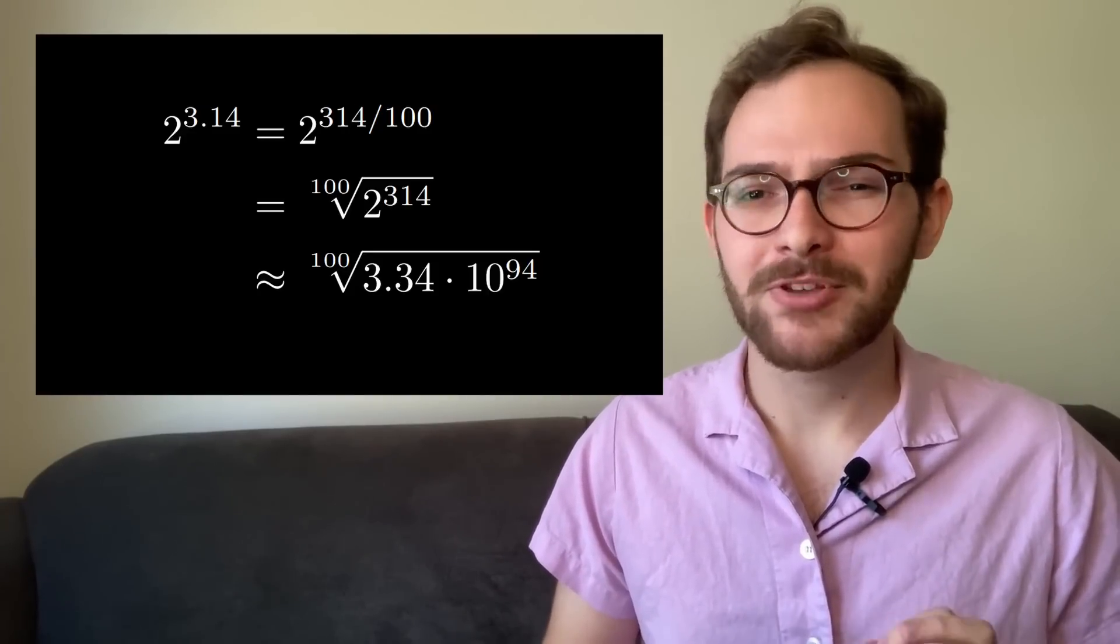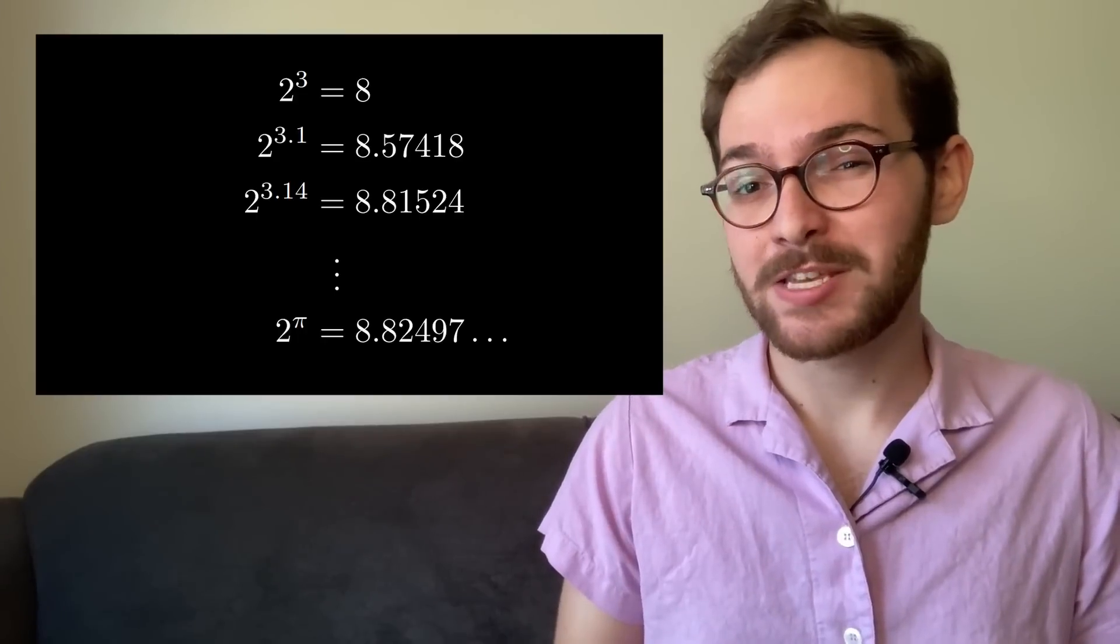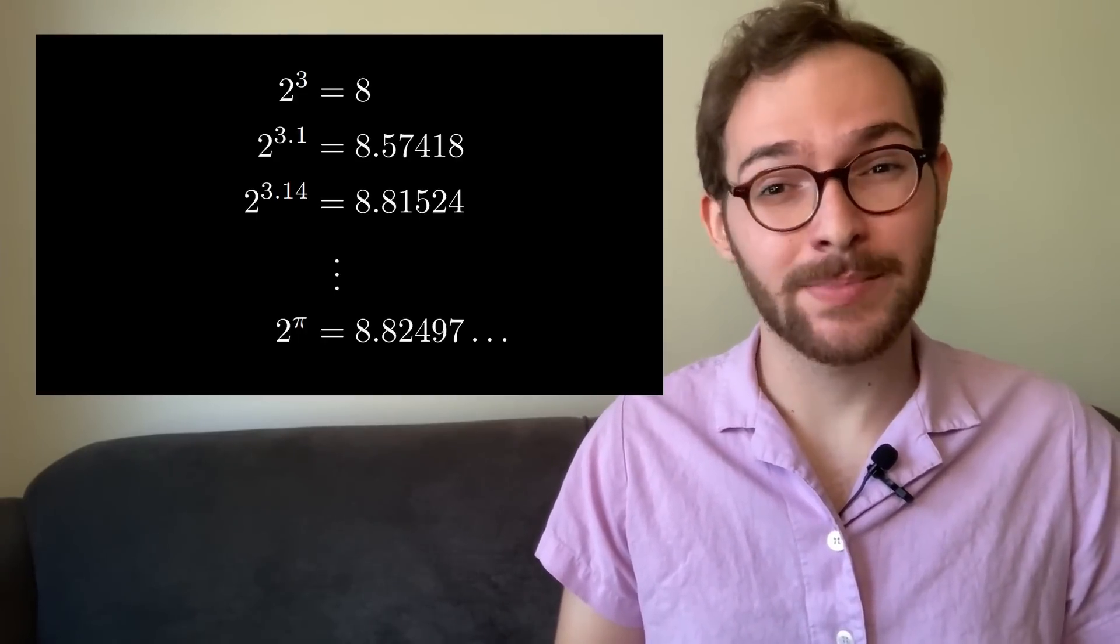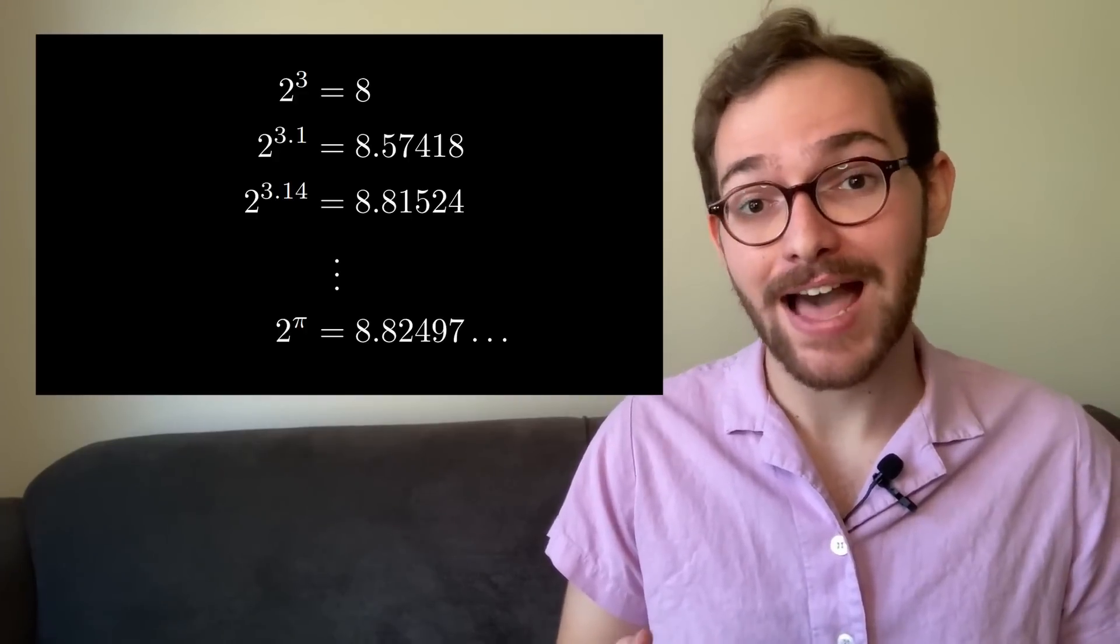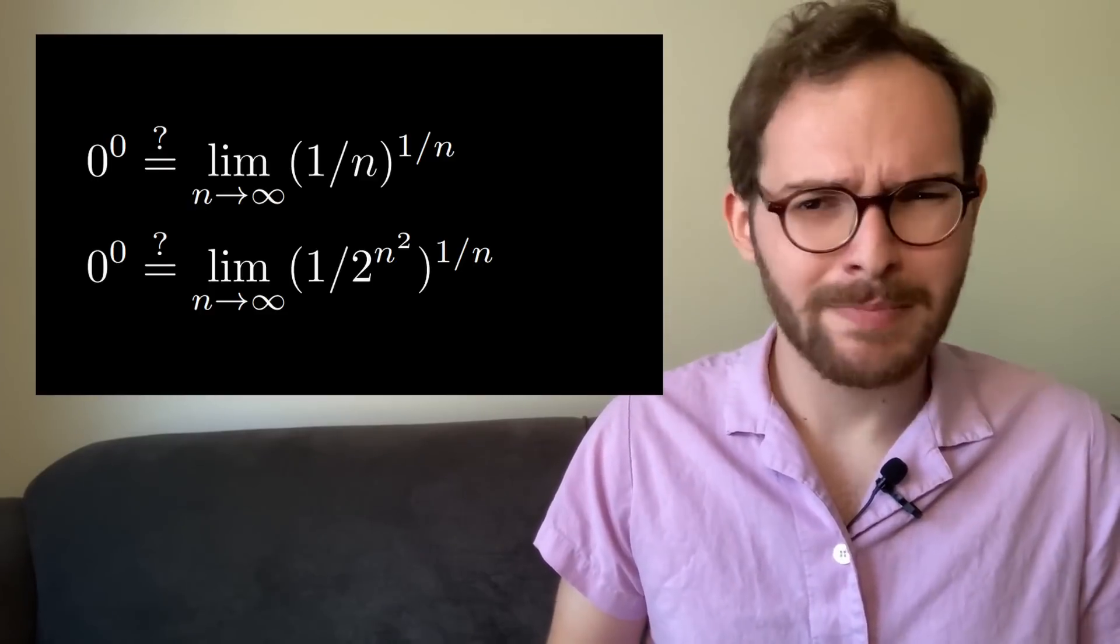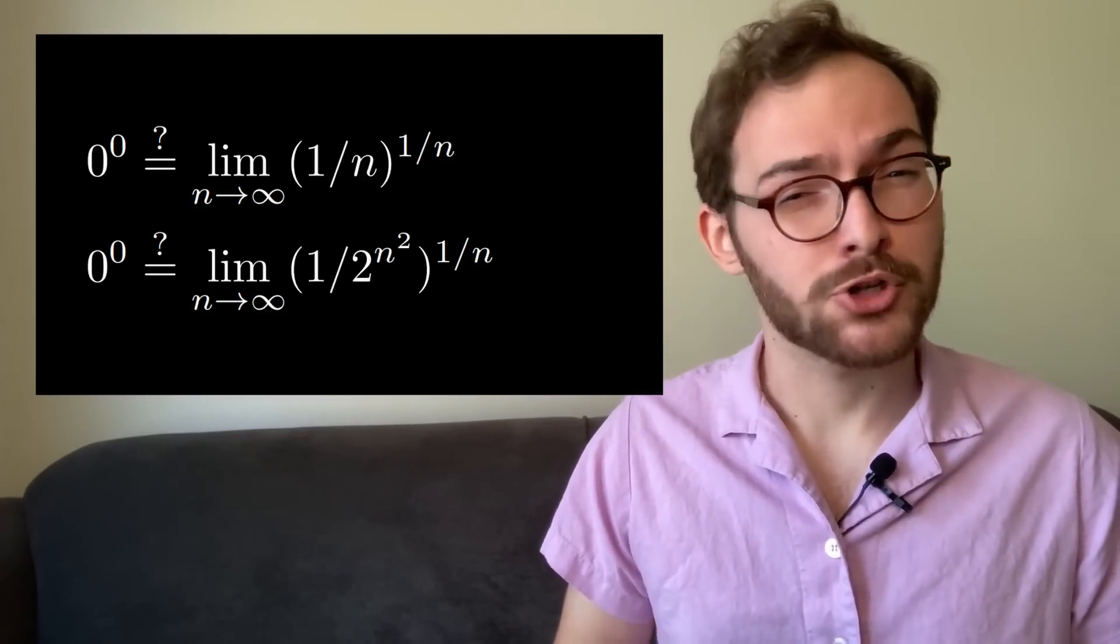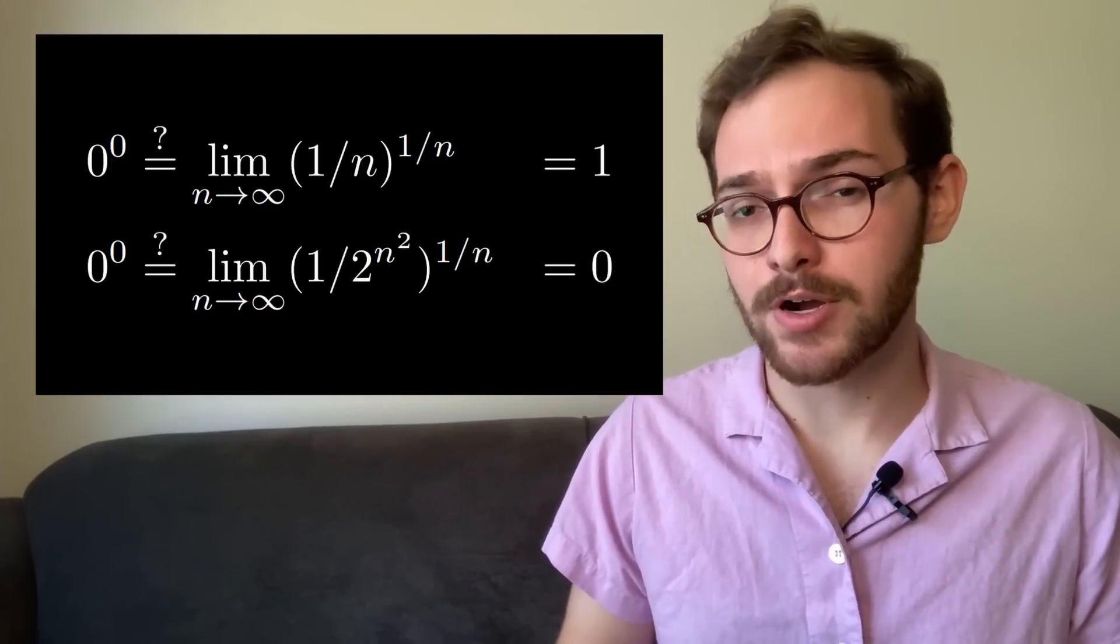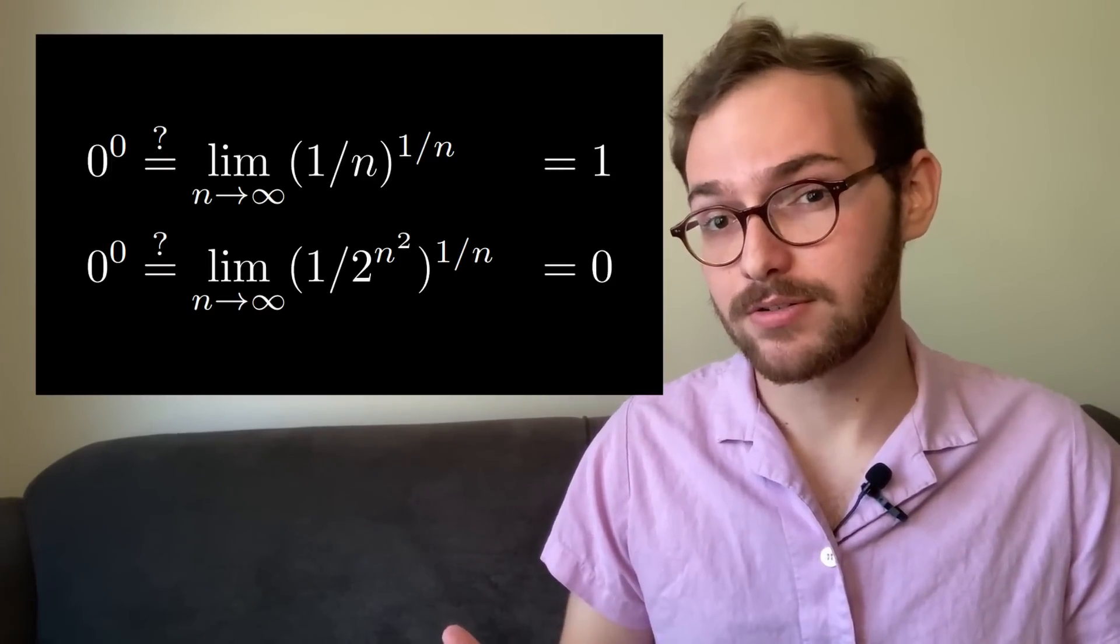But there's actually a much more fatal flaw. How do you know that for every sequence approaching pi, 2 to that sequence is going to be approaching the same number? This is actually a real concern to have with exponents. If you wanted to compute 0 to the 0, you might try a similar approach, but here are two sequences that should approach 0 to the 0, but one approaches 1 and the other approaches 0.